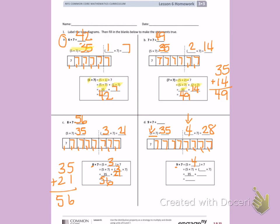5 times 7 plus 4 times 7. 35 plus my total, 28. I'm going to add 35 plus 28. 5 plus 8 is 13, 3 plus 2 is 5, plus 1 is 6. So, 9 times 7 equals 63.